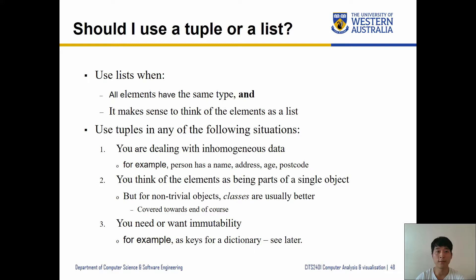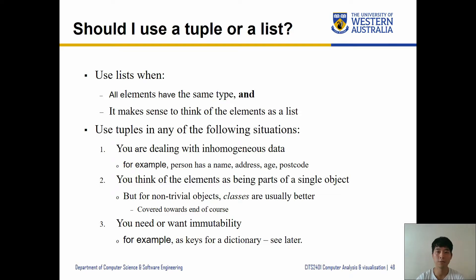So which one should you be using? In many cases you'll be using lists for processing data where it needs updating or changing. This works best when you have all the same type inside a list. Also use lists when it makes sense to think of the elements as a collection — for example, a list of fruits. But if you have a mixture of types like fruits, vegetables, frozen food, and other consumables, it may not be a good idea unless you can see them as a whole, like a grocery list.